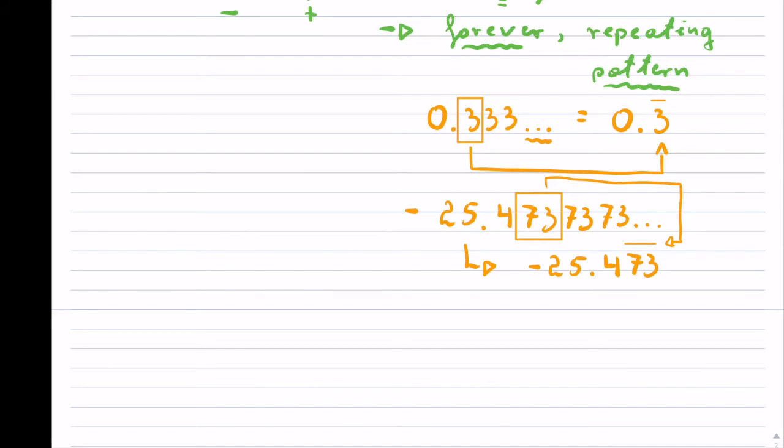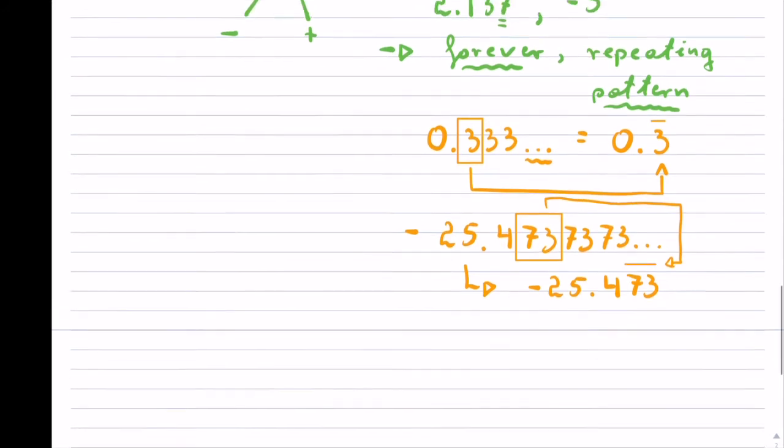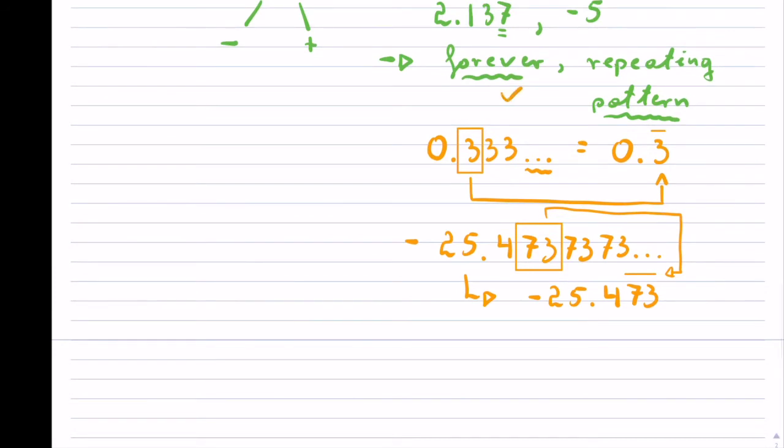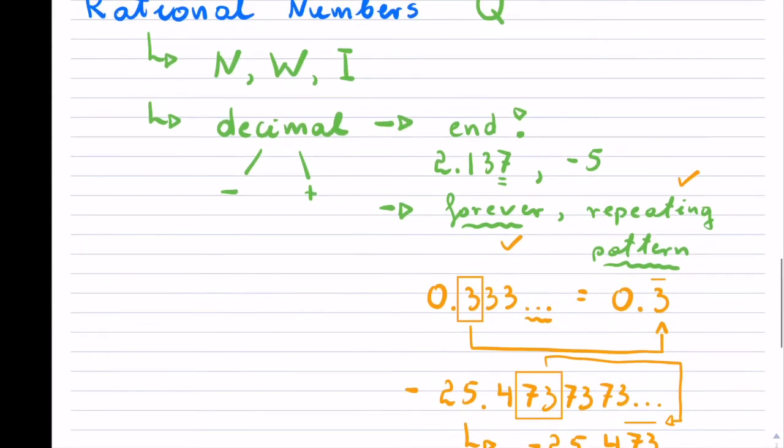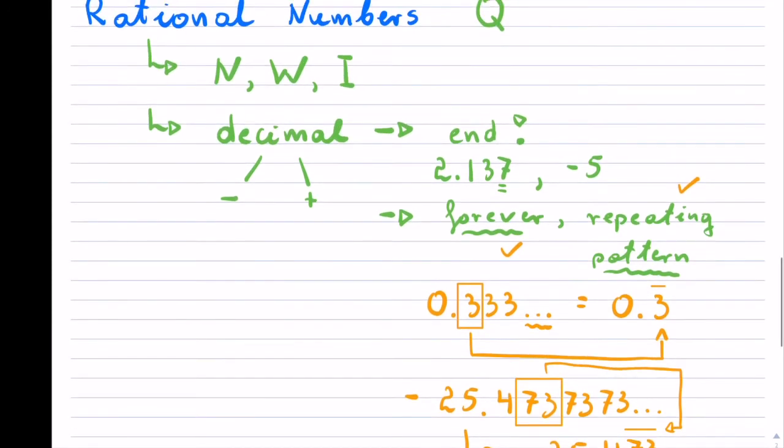These particular decimals go on forever and have a repeating pattern. So if you have a number, which is a decimal, that ends, or that goes forever and repeats, then it is considered rational.